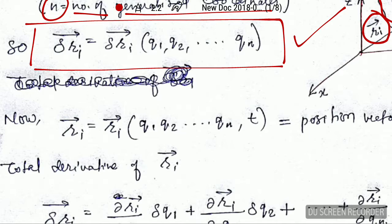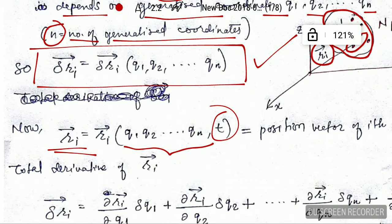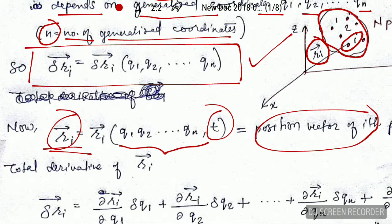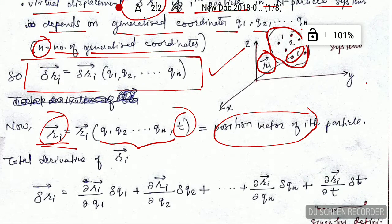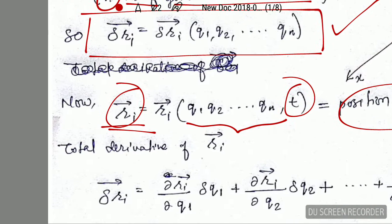As already explained in my previous lectures, the position vector r_i of the ith particle in an n-particle system depends on n generalized coordinates and also on time. So r_i is the position vector of the ith particle, and now we need to find the virtual displacement.